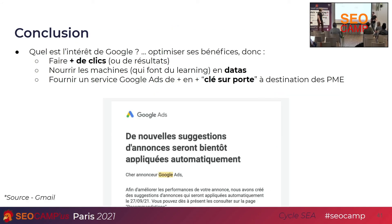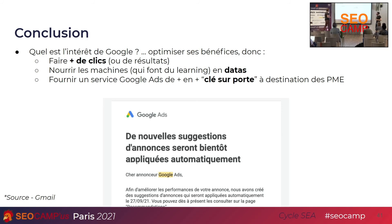En conclusion : quel est l'intérêt de Google ? C'est quelque chose qu'il faut toujours se poser quand il vous propose un truc automatique, un nouveau conseil, une nouvelle technologie. Pour lui, c'est optimiser ses bénéfices — plus de clics ou plus de résultats, la plupart des annonceurs utilisent une stratégie par clic. Ensuite, nourrir les machines — le machine learning a besoin de data. C'est vraiment quelque chose qui va pousser pour qu'on l'utilise, simplement pour qu'il améliore sa propre analyse automatisée.